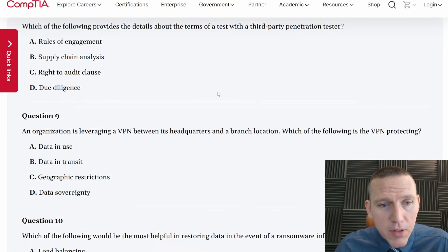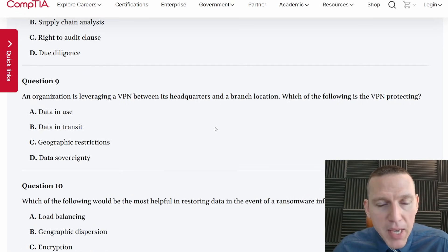An organization is leveraging a VPN, a virtual private network between its headquarters and a branch location, which of the following is the VPN protecting. So this is a site to site VPN, not a remote access VPN, but what is this protecting? Data in use, data in transit, geographic restrictions, or data sovereignty. A VPN would protect data as it's transferred throughout the internet. It wouldn't protect data at rest. So it'd be data in transit. So that's absolutely Bravo or B.